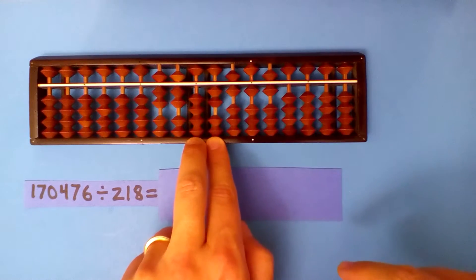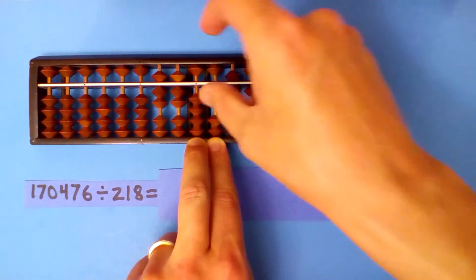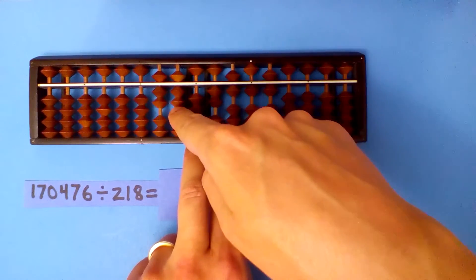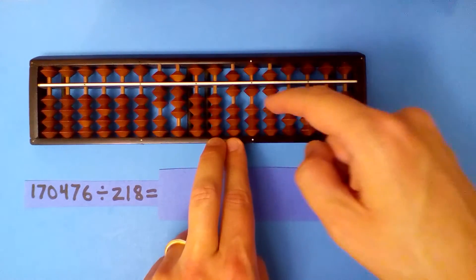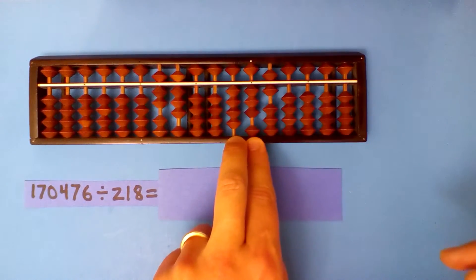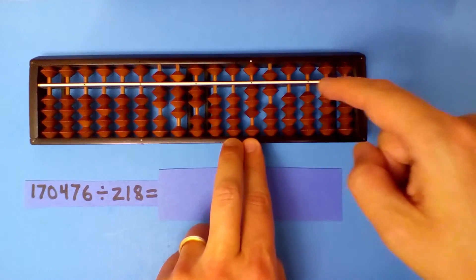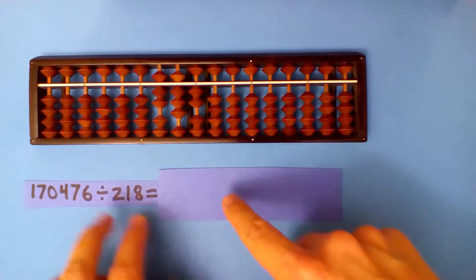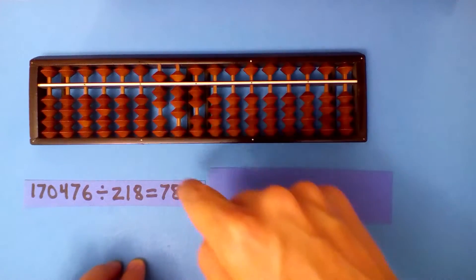Now I can divide 2.18 into 2.6. I already have a number here, but that's okay — I'm going to add one more to it. Since I added one, I'll multiply: one times 2 is 2, one times 1 is 1, one times 8 is 8. Then we continue: 2 into 4 is twice — two times 2 is 4, two times 1 is 2, two times 8 is 16. Our answer is 782. Even if you have a number, you can add to it if you need to.